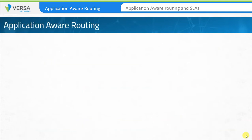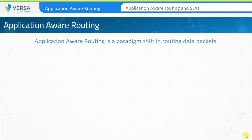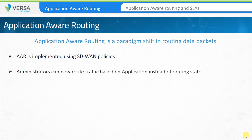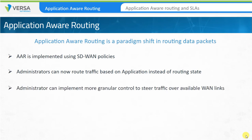Application-aware routing is a paradigm shift when it comes to routing data packets through IP networks. It is implemented by using SD-WAN policies. With application-aware routing, administrators can assign traffic to a WAN circuit based on the application, not just routing state. This allows administrators to apply much more granular control to steer traffic over available WAN links based on the link properties and performance, and based on the application needs.